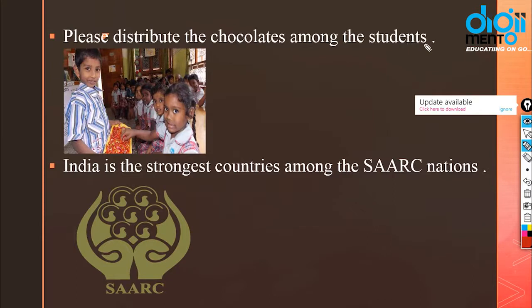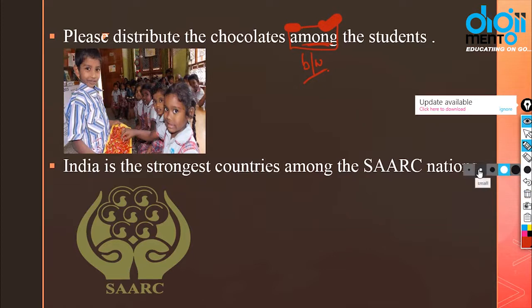For example: please distribute the chocolates among the students. If I use 'between' instead, it means there are only two students. But 'among' means more than two — it could be five, ten, or unlimited. The number of students can be anything, but it is more than two.